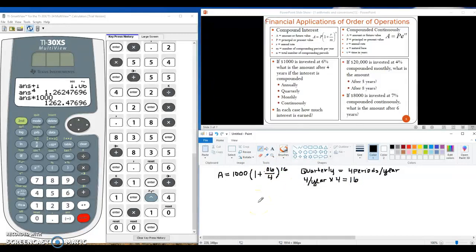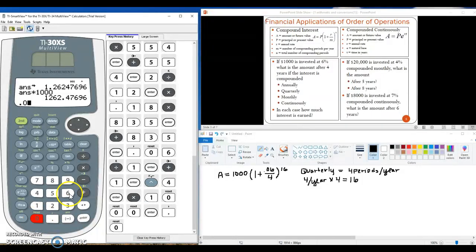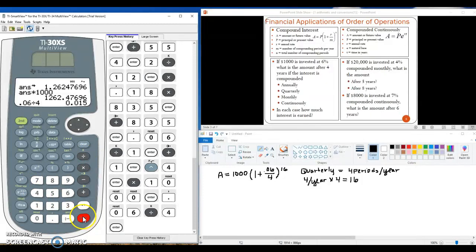All right, we're ready to go to our calculator. Order of operations exactly the same here. So we start in our parentheses with the division. So we get 0.06 divided by 4, hit enter. Add the 1, hit enter.